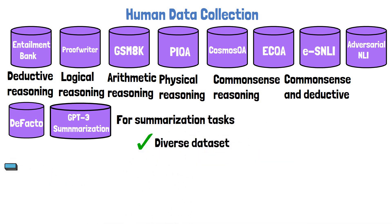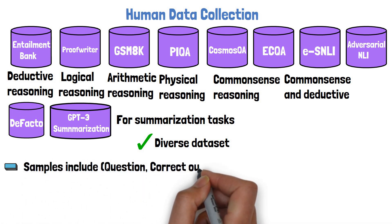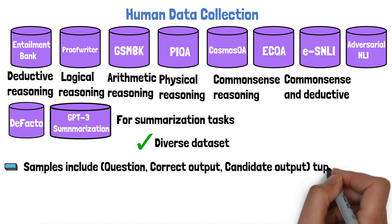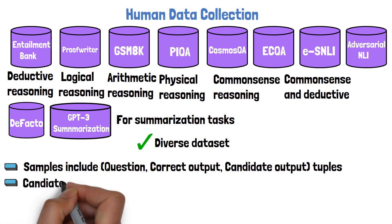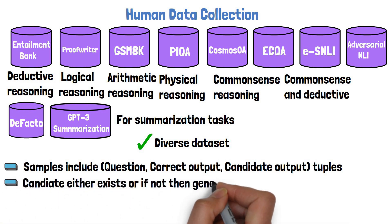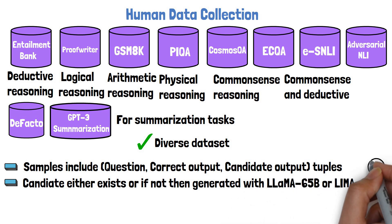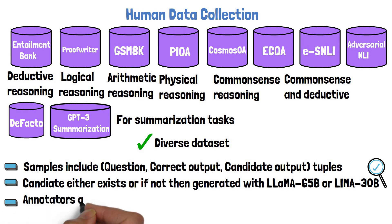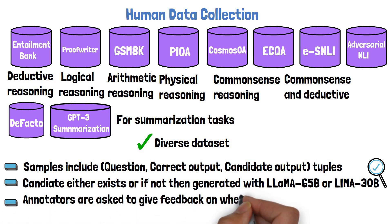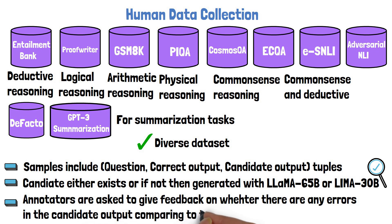This diversification helps create a diverse and higher quality dataset. The samples include a question, a correct output, and a candidate output, where the candidate output either exists in the source dataset or is generated using LLAMA 65B or LLAMA 30B and then manually inspected. The annotators are asked to give feedback on whether there are any errors in the candidate output compared to the correct output.